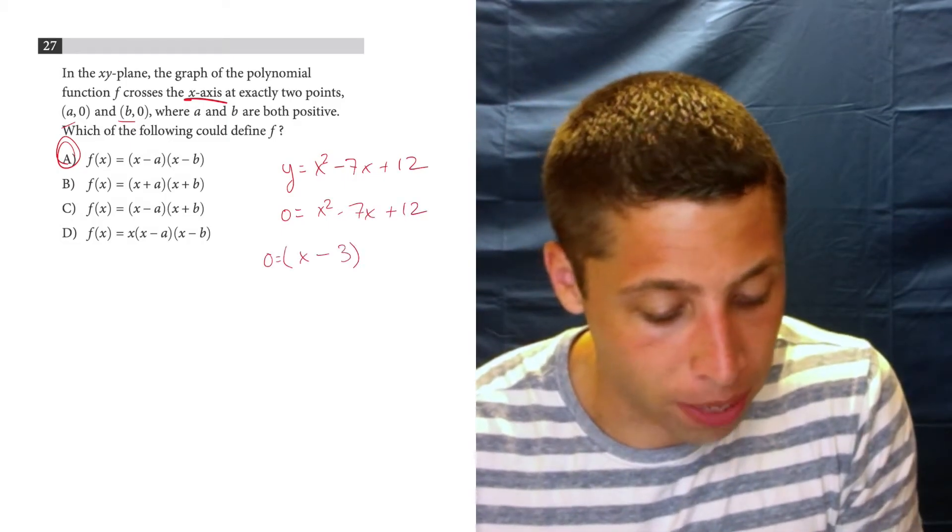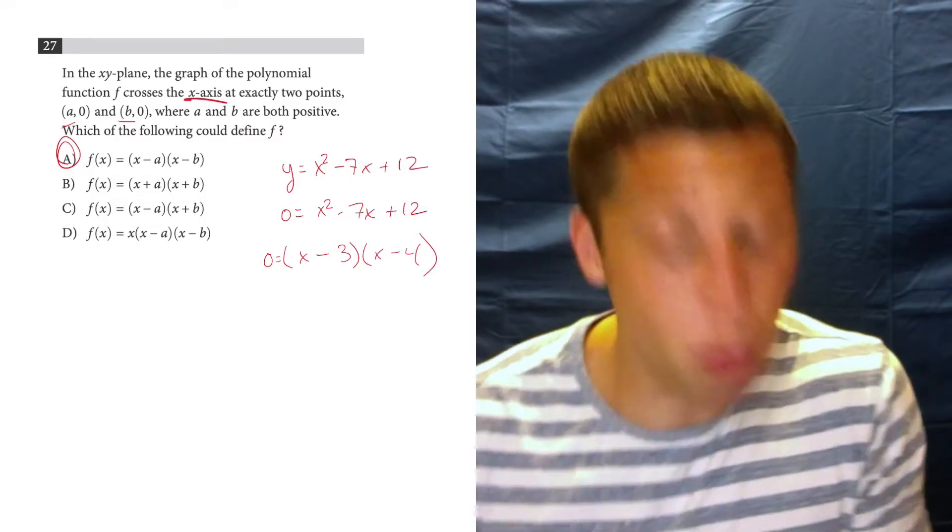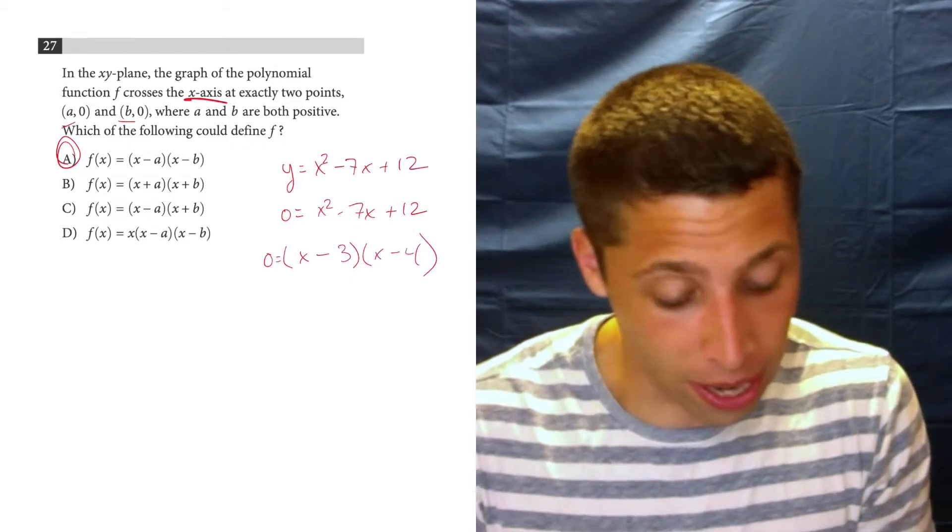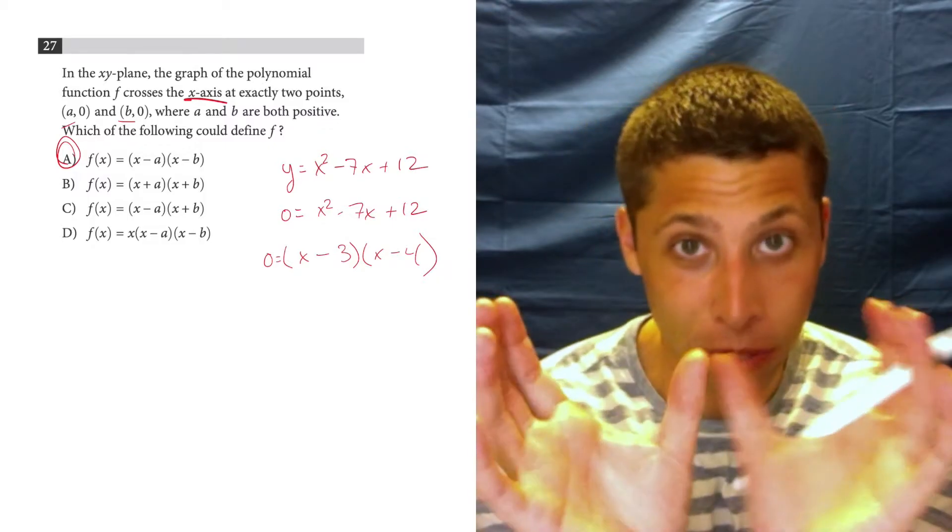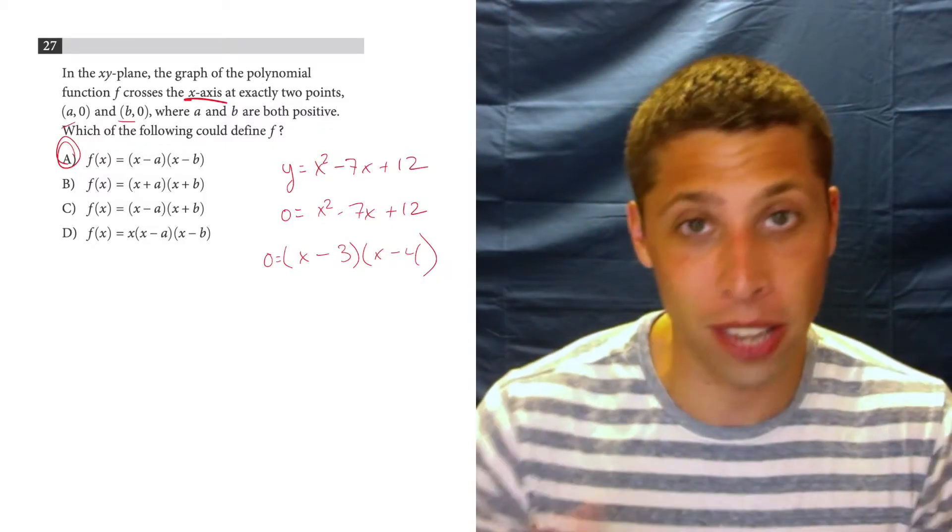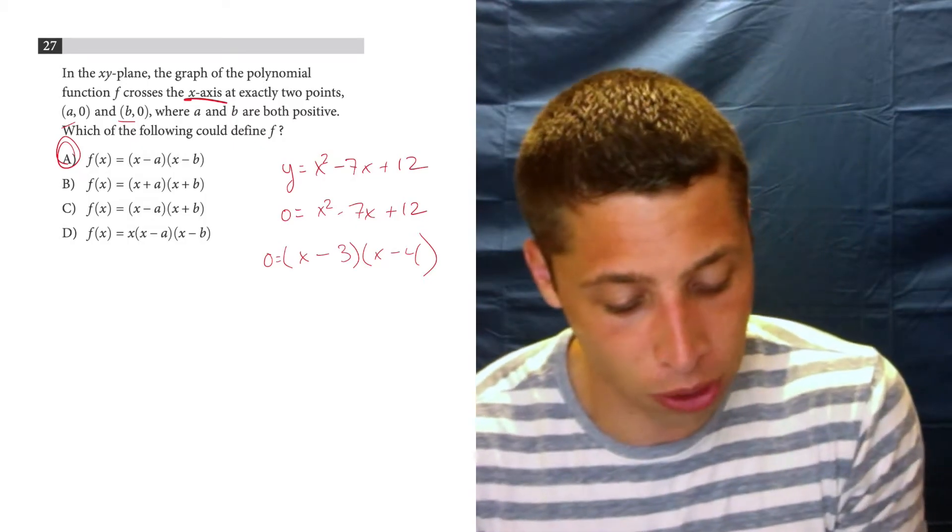So this would be x minus 3, x minus 4, and then what are the x-intercepts? What we're supposed to do is set each of these factored terms to equal 0.